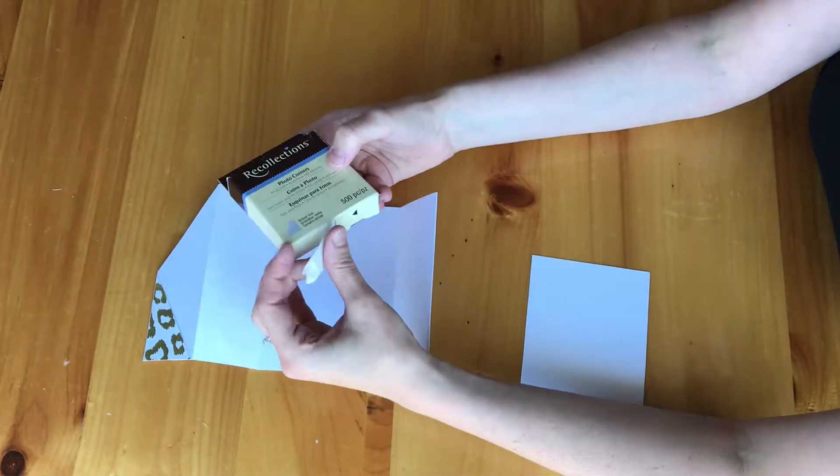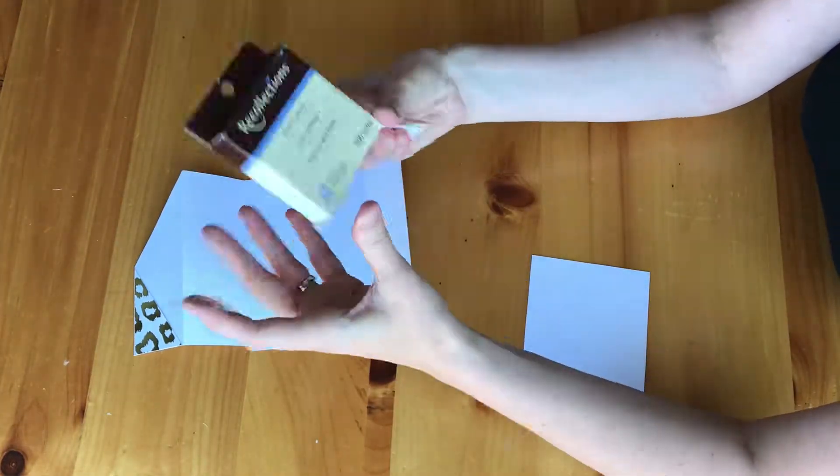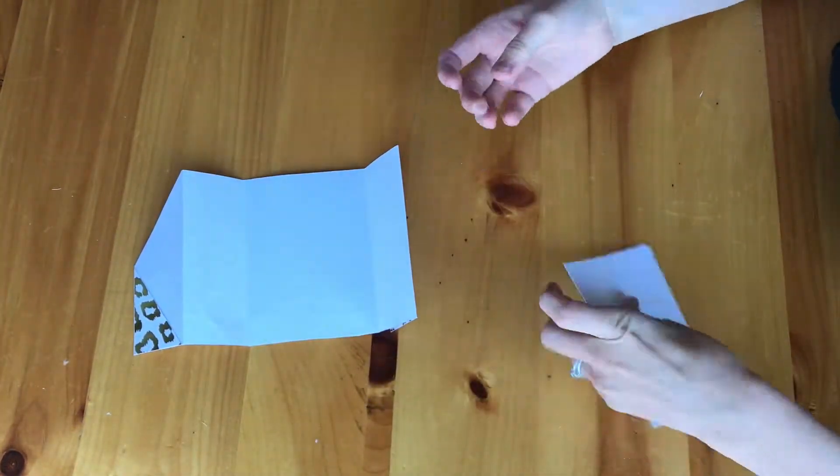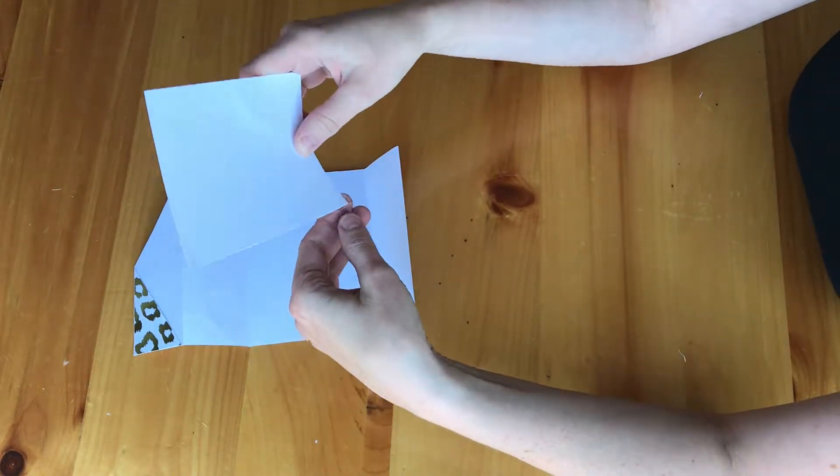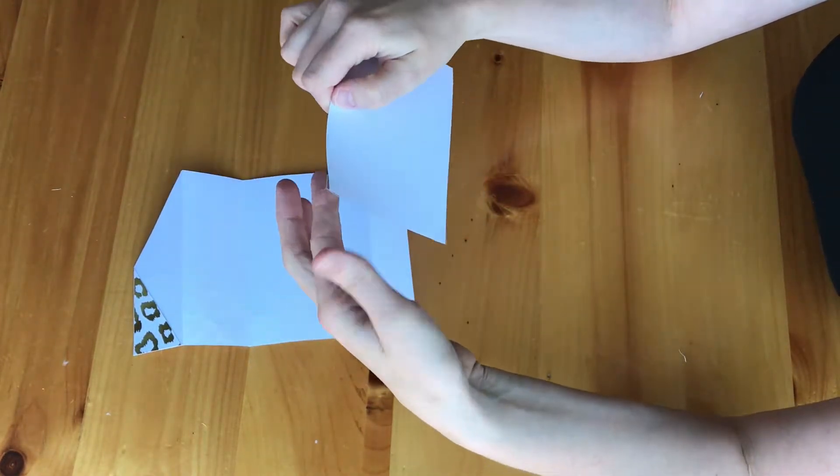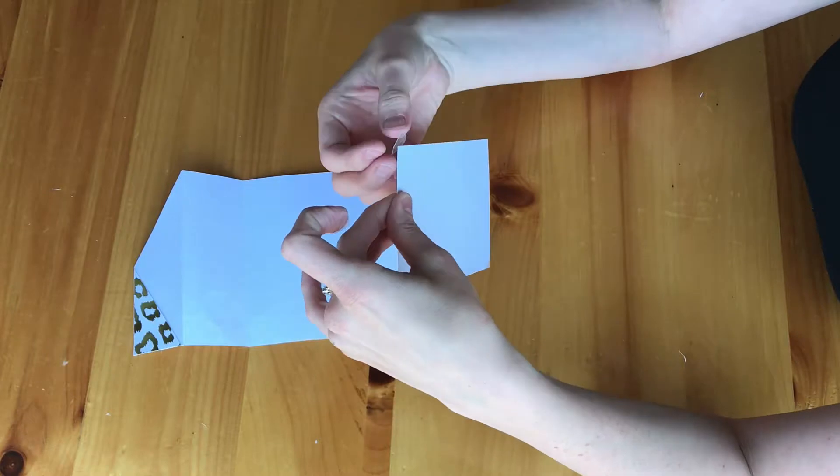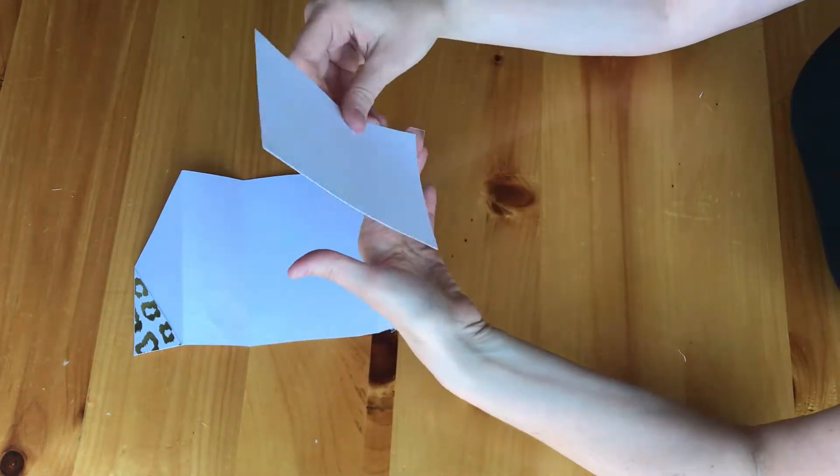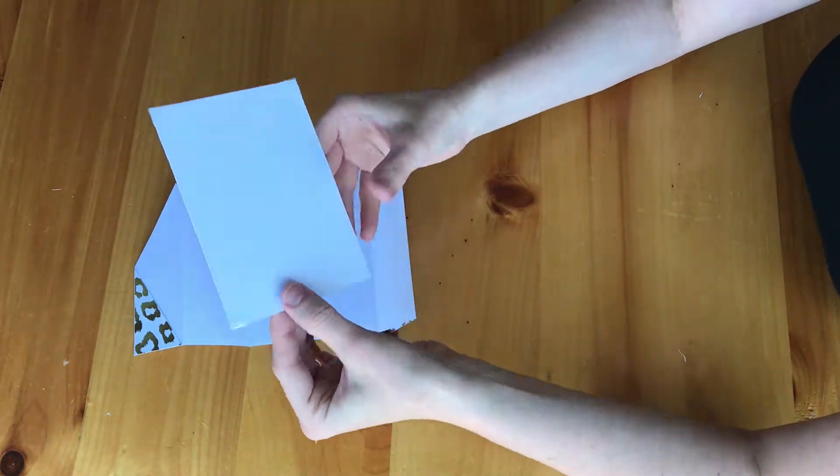Next I take photo corners and I will put one corner on each corner of this piece of paper and then I will lay it down on the inside of the card.